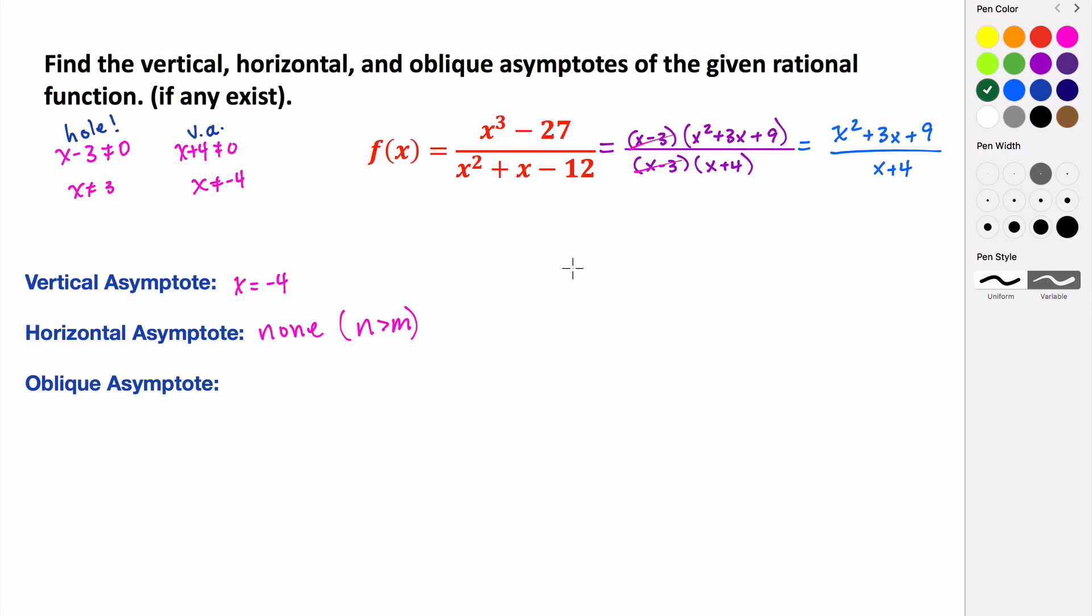So let's do the long division for this. So we have x squared plus 3x plus 9 being divided by x plus 4. So we ask ourselves, what do I multiply x by to get x squared? Well that's just x. So x times x is x squared. x times 4 is positive 4x. And then we subtract these. So we're subtracting the whole thing. Which means we have to distribute the negative through. So these are opposites. So they cancel. And then 3x minus 4x. That's going to be negative x. Bring down the 9. So plus 9.